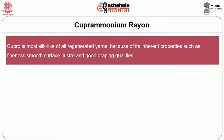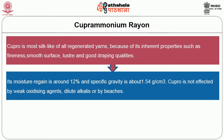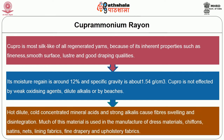Cupro is almost silk-like of all regenerated yarns because of its inherent properties such as fineness, smooth surface, luster and good draping qualities. Its moisture regain is around 12% and specific gravity is about 1.54 grams per cubic centimeter. Cupro is not affected by weak oxidizing agents, dilute alkalies or bleaches. However, hot dilute and cold concentrated mineral acids and strong alkalies cause fiber swelling and fiber disintegration. Most of this material is used in the manufacture of voile materials, chiffons, satins, nets, interlining and lining fabrics, fine draperies and upholstery fabrics.